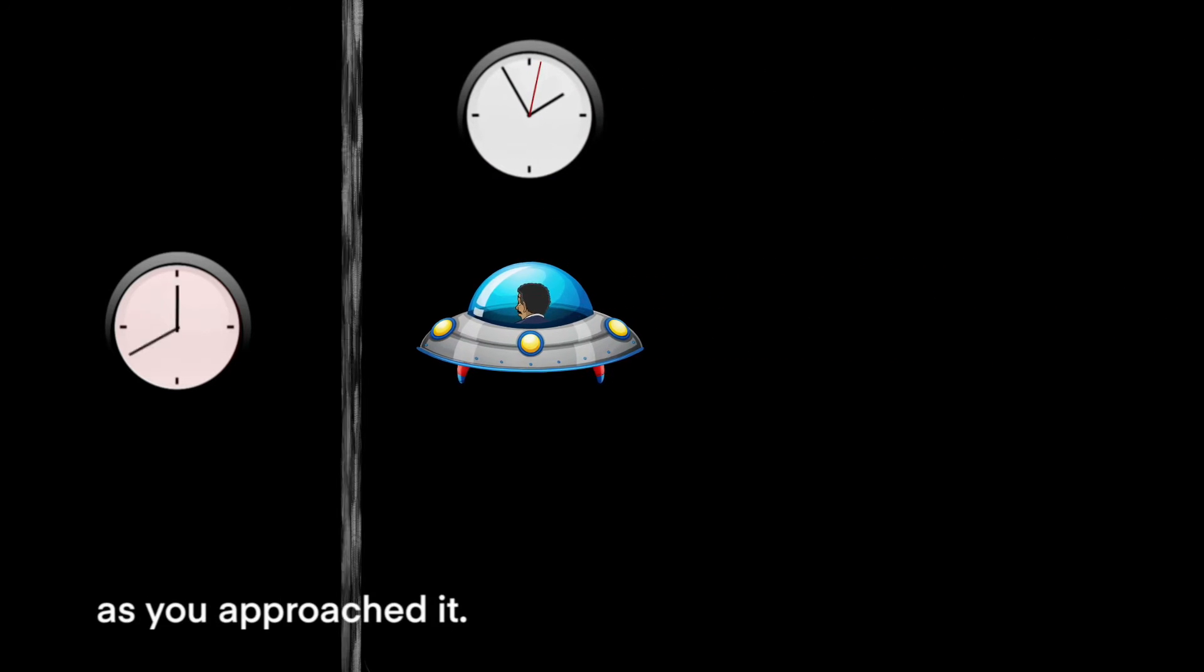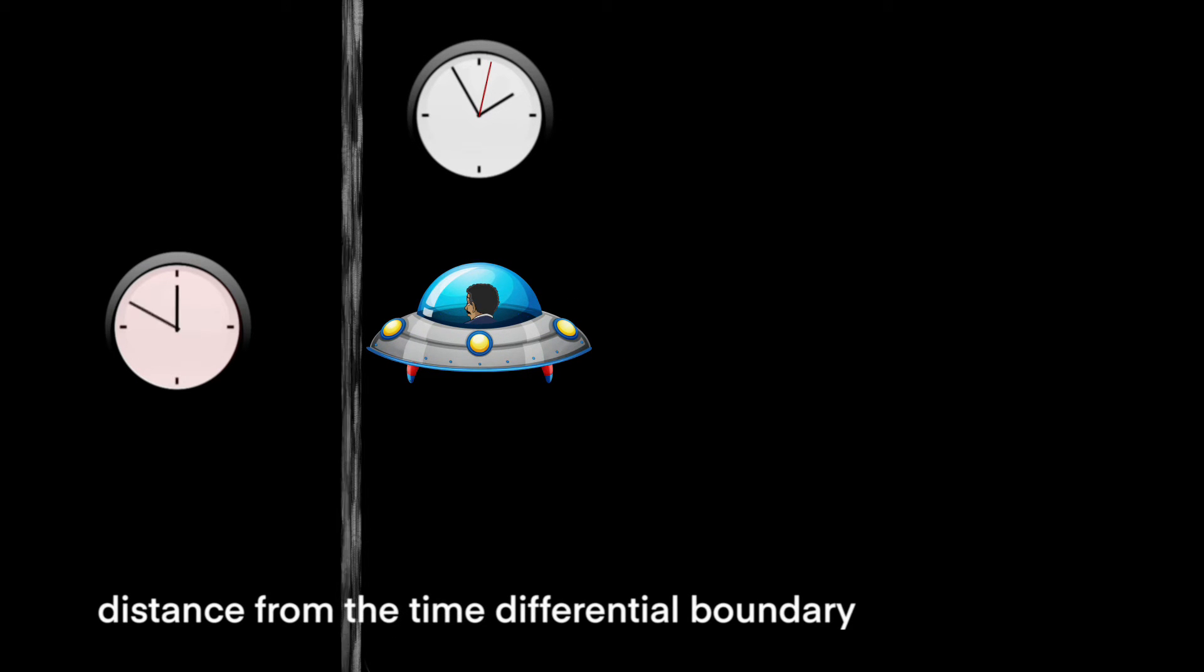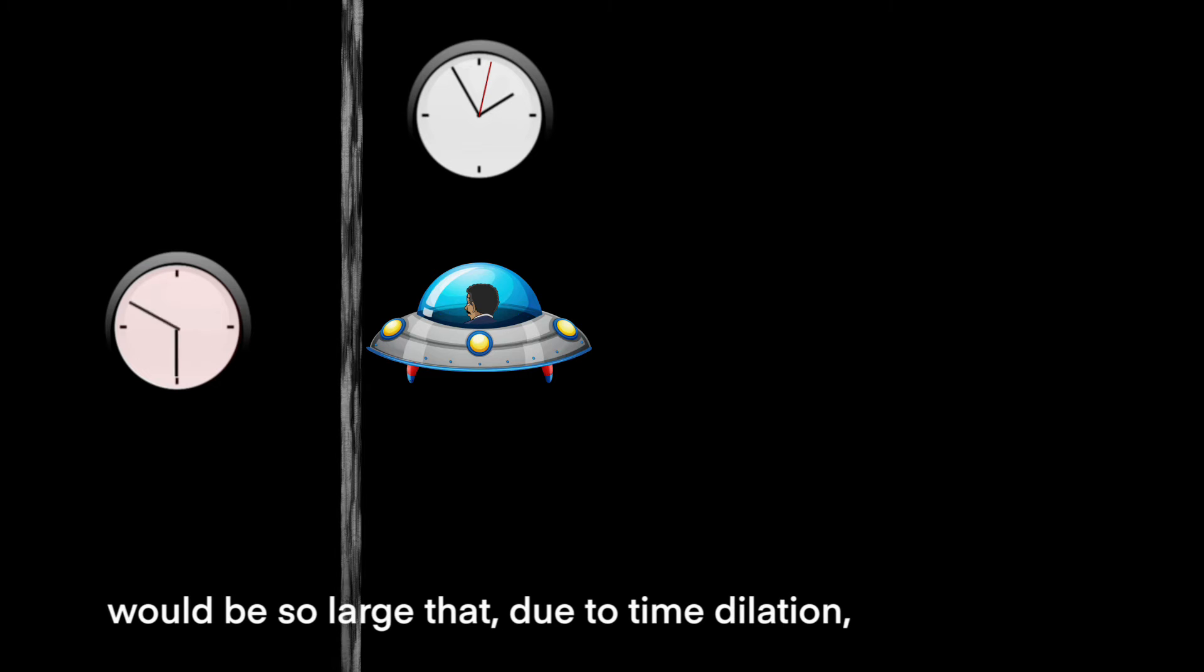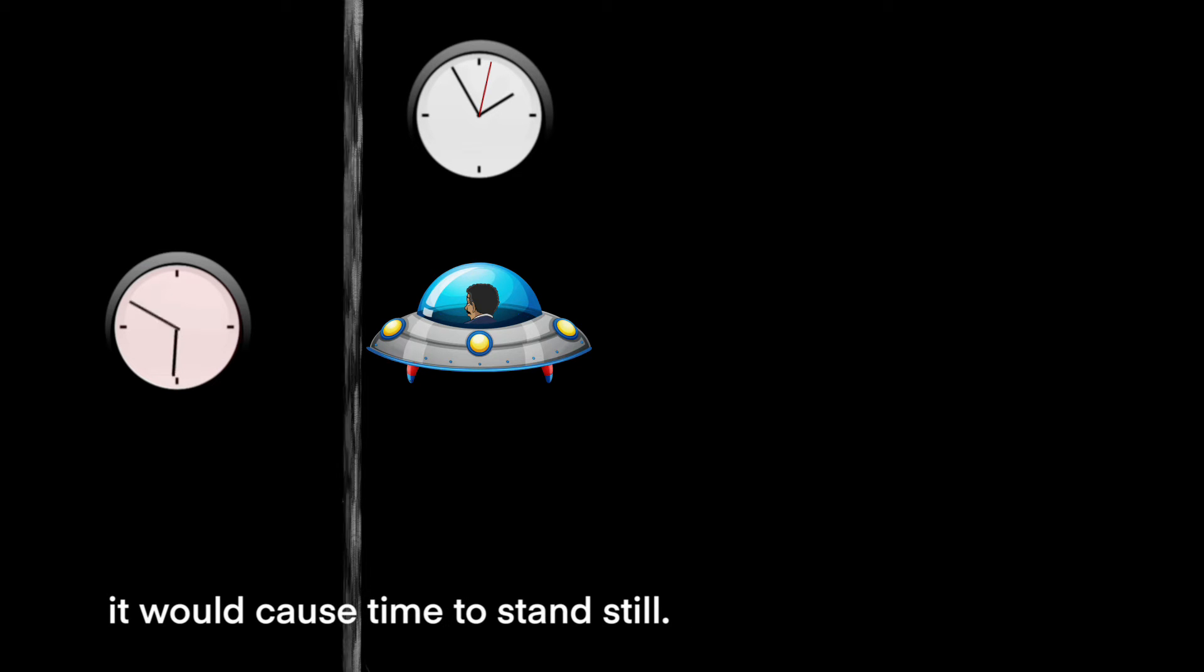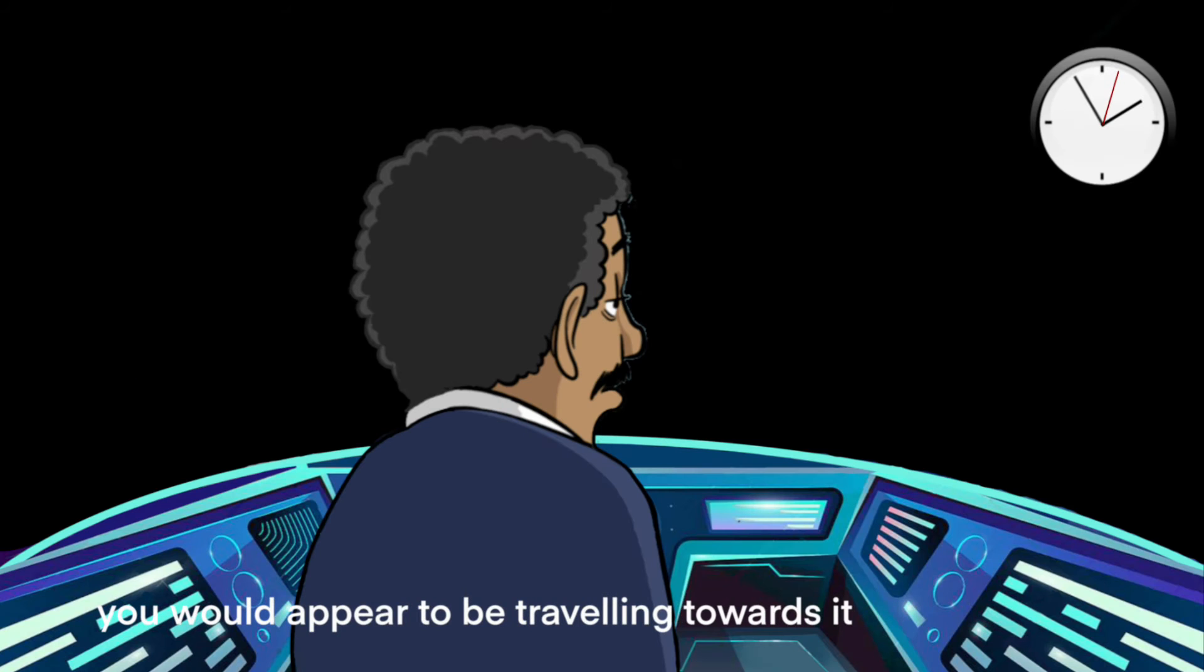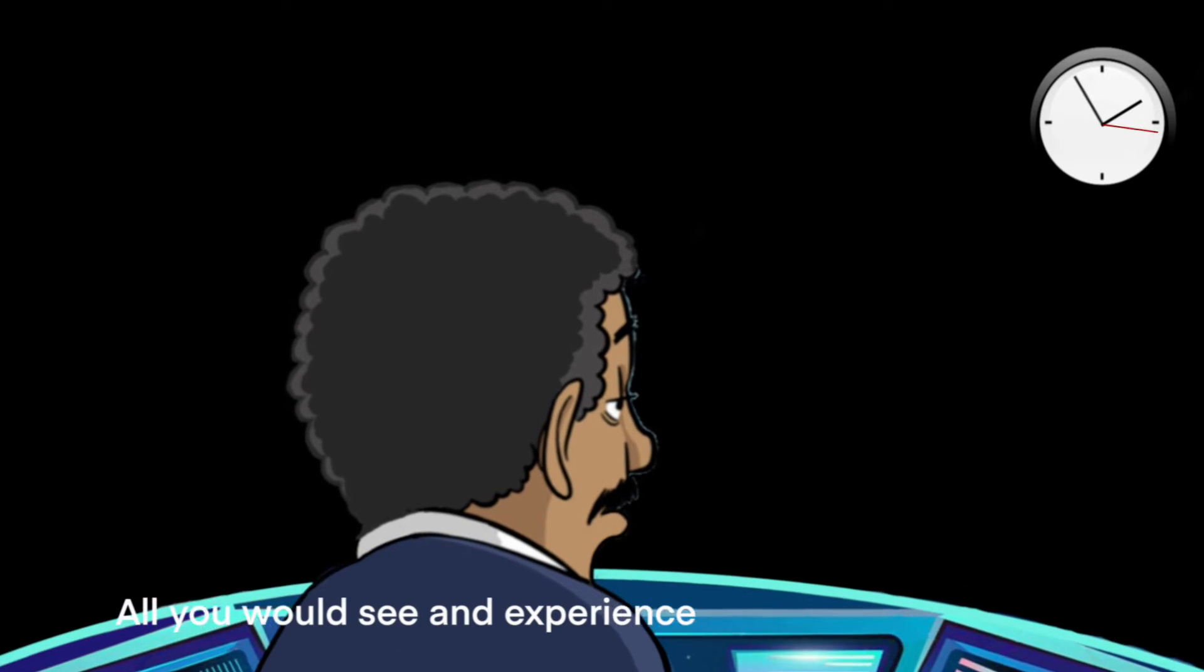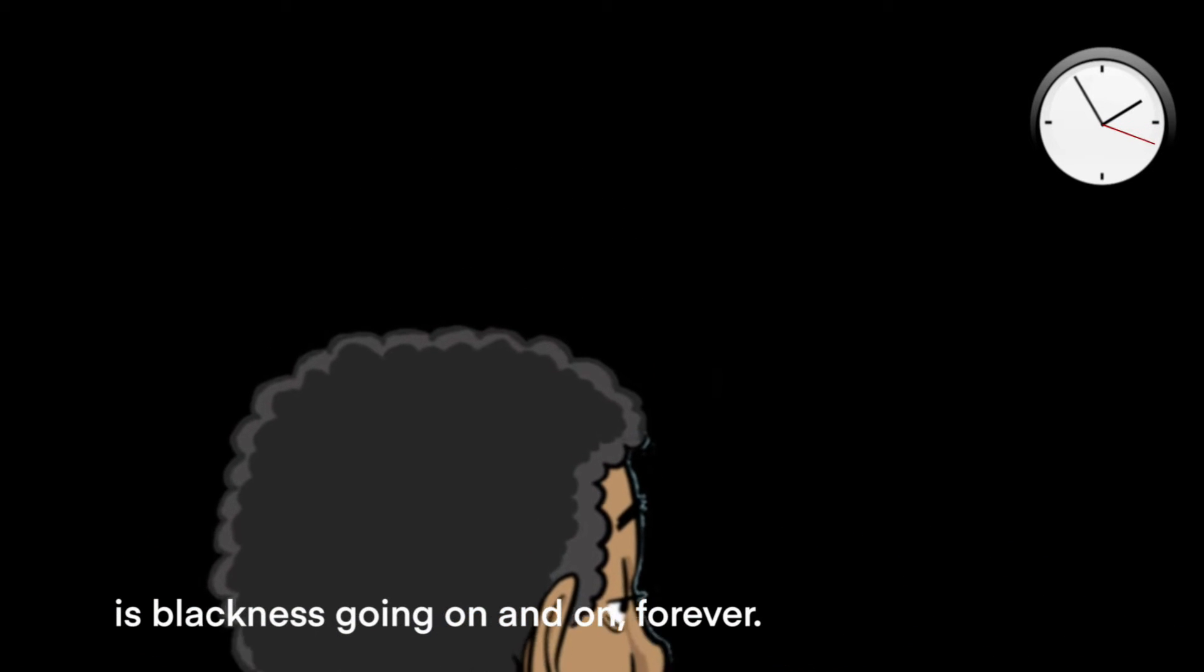If it was possible to travel to the boundary, time would gradually slow down as you approached it. The curvature of space-time at a certain distance from the time differential boundary would be so large that, due to time dilation, it would cause time to stand still. Once time reaches a standstill, you could go no further, but in your own time frame you would appear to be traveling towards it but never reach it, giving the impression that the universe ahead is infinite empty space. You couldn't see the boundary or beyond it because it doesn't emit, transmit, or reflect light. All you would see and experience is blackness going on and on forever.